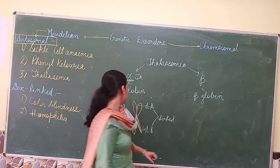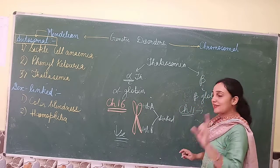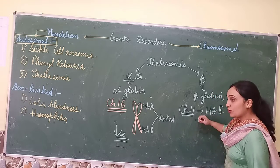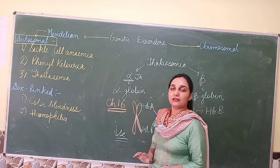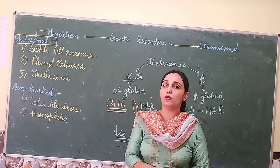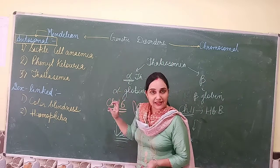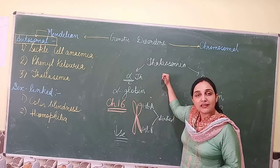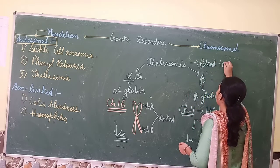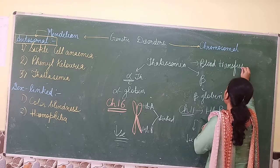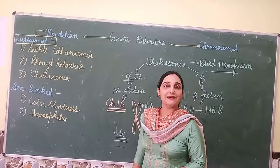Similarly, in the case of beta globin, on chromosome number 11, there is a single gene — HbB — which gets mutated, causing a decrease in the production of beta globin. Since both chains cannot be produced normally, hemoglobin synthesis is impaired. The symptoms are mostly similar to sickle cell anemia since both are conditions of anemia. However, thalassemia can be very severe, and patients require blood transfusions. This is all about autosomal Mendelian disorders.